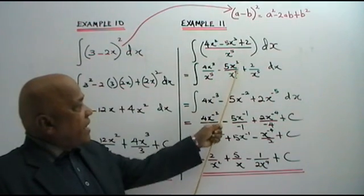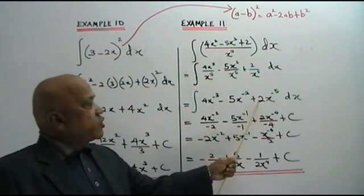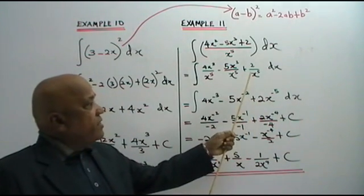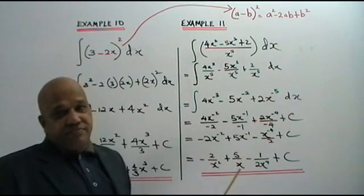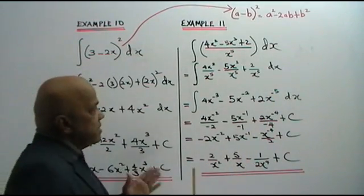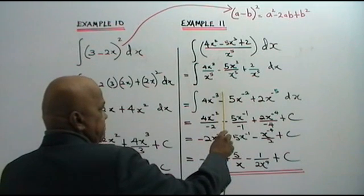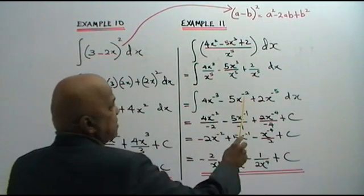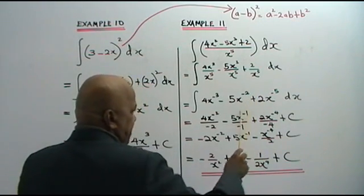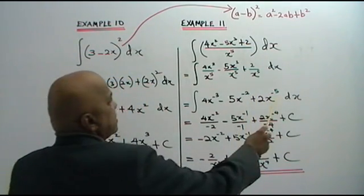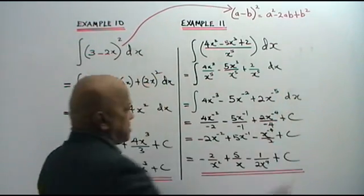Minus 5x to the power of 3 minus 5, which is negative 2. Plus 2x to the power of — bring this x to the power of 5 up — you get negative 5. Now from here: negative 3 plus 1 is negative 2, bring down; negative 2 plus 1 is negative 1, bring it down; negative 5 plus 1 is negative 4, bring it down. Plus C.